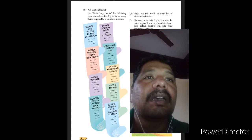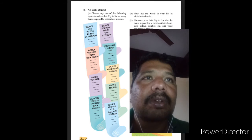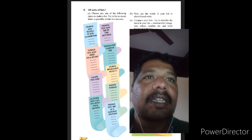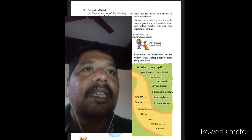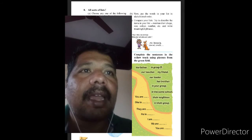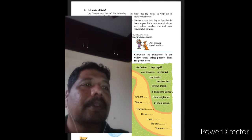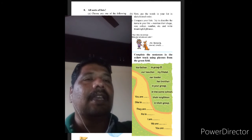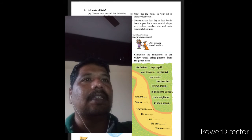After that there is activity number 9. Here you have to complete the sentences in the yellow track using phrases from the green field. Green field is here and these are the starting of the sentences: She is, they are, he is, I am, we are, you are.